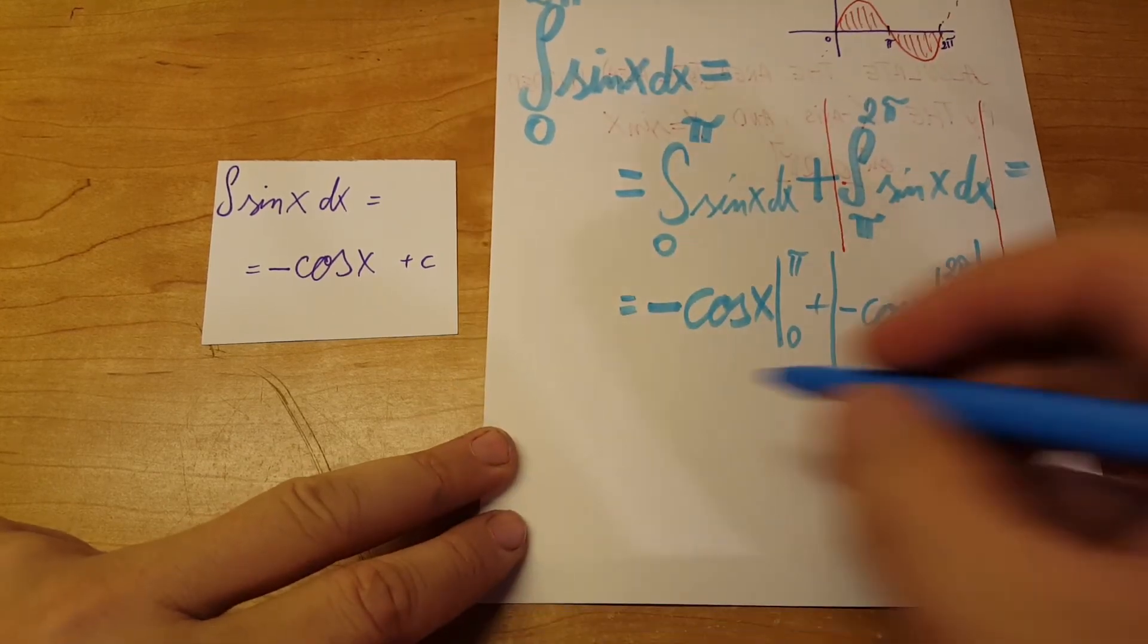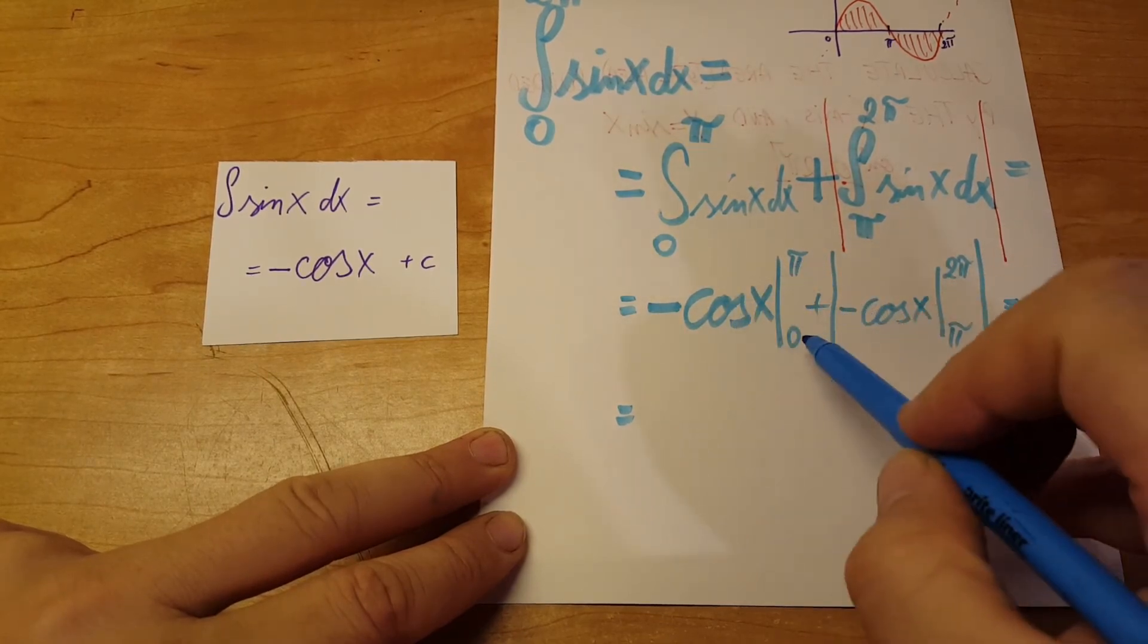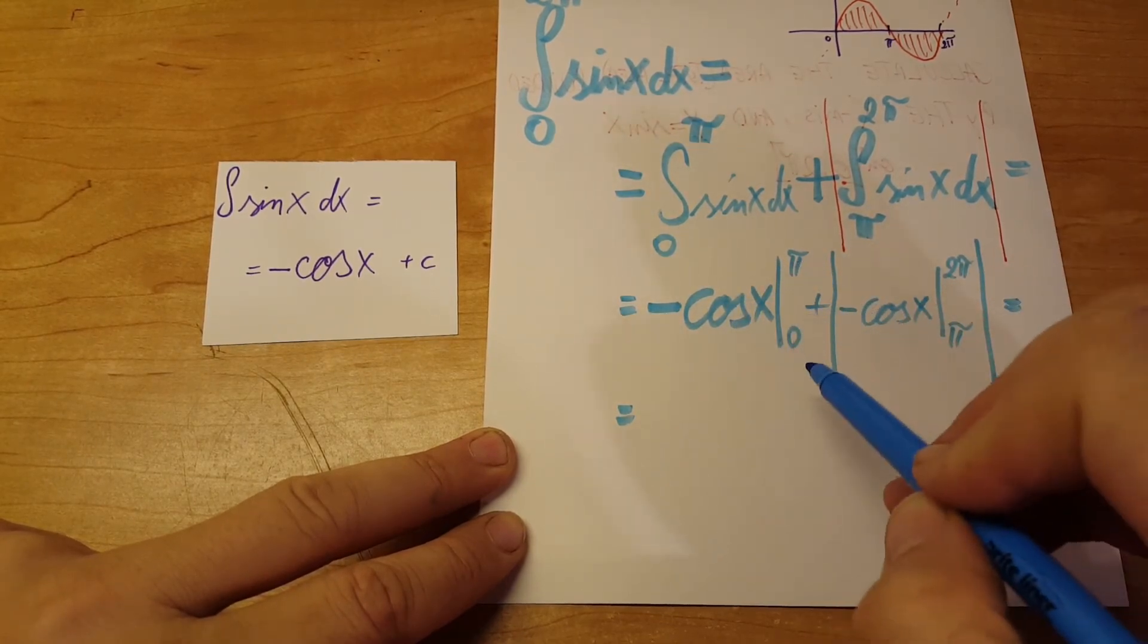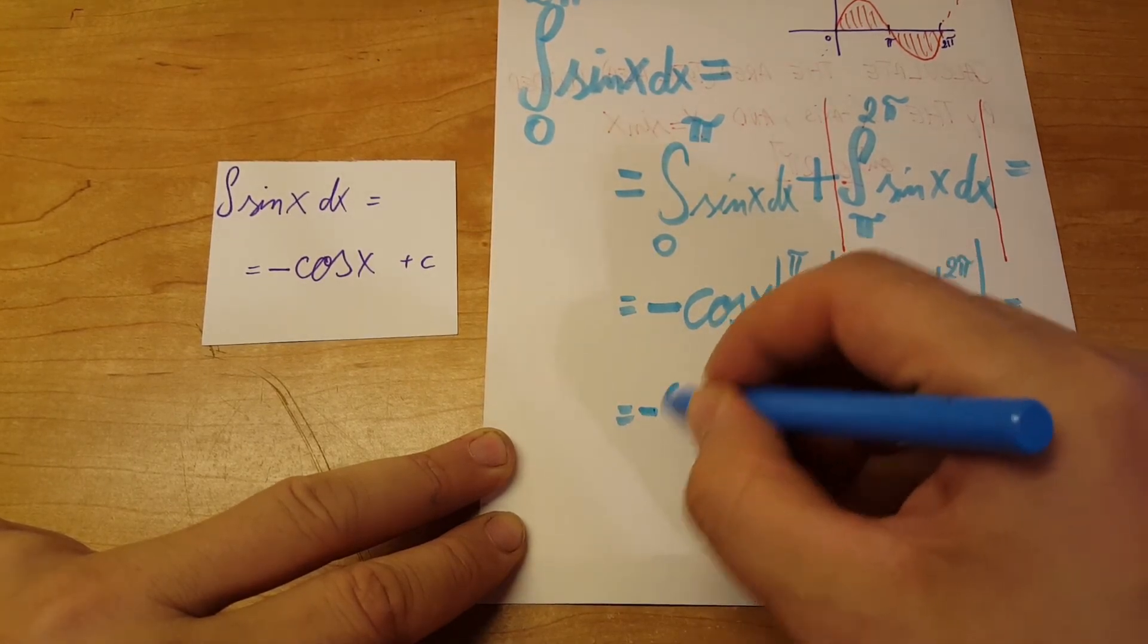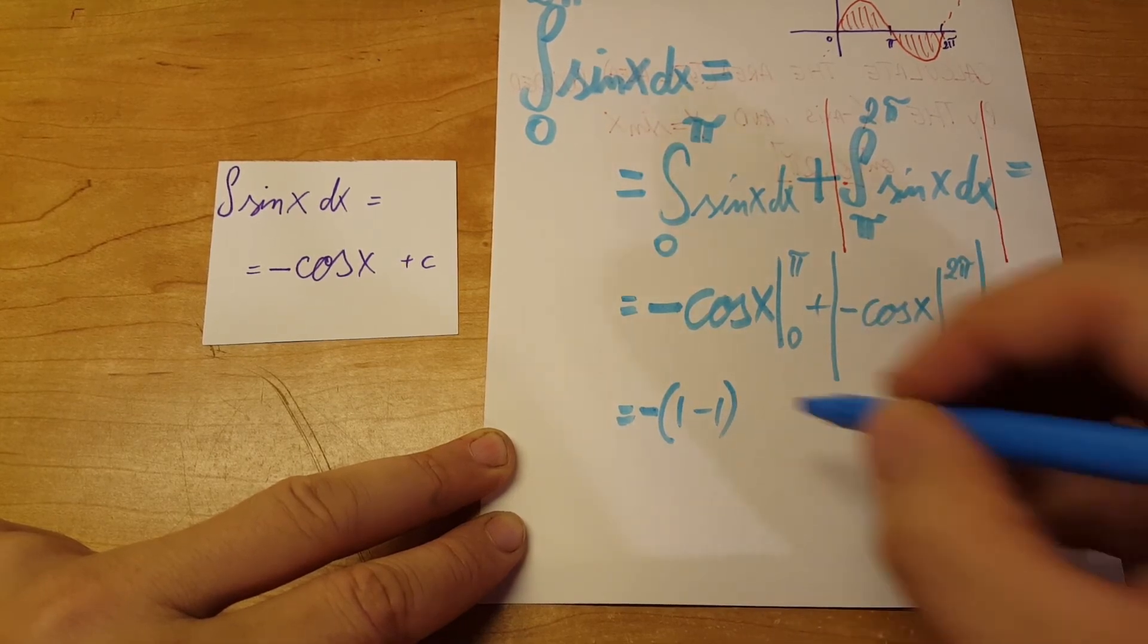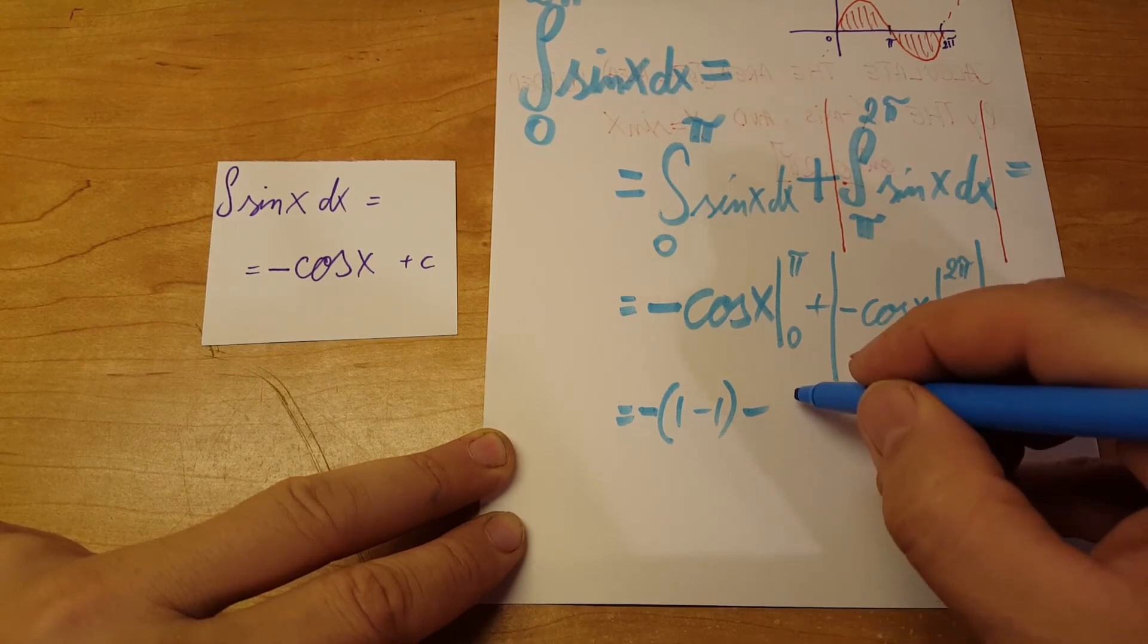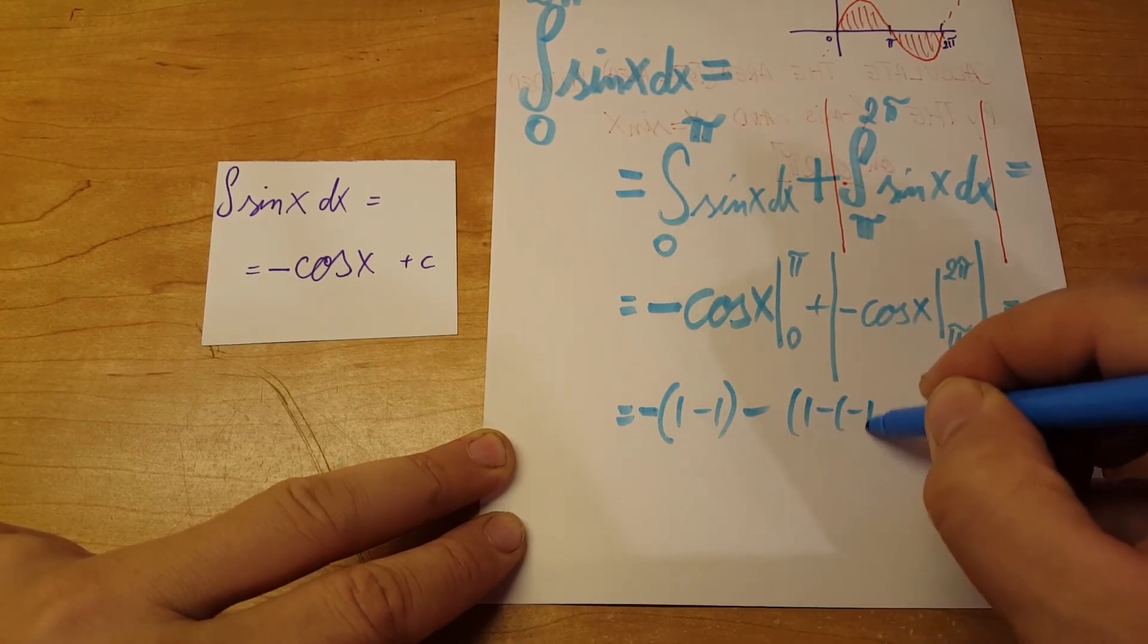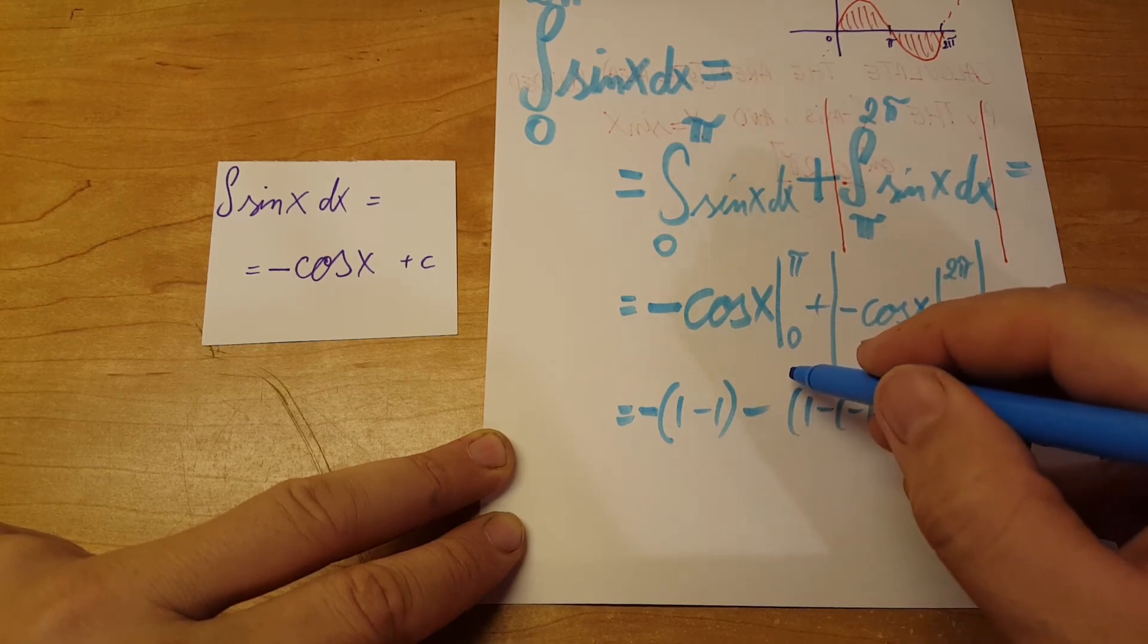Equals - we're gonna plug in pi minus plug in zero - we're gonna get negative one minus one, minus the absolute value, and we're gonna get one minus minus one.